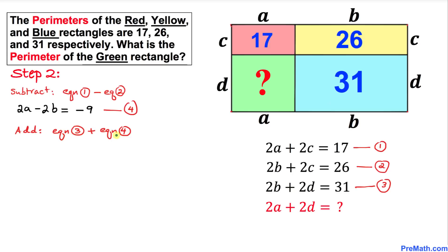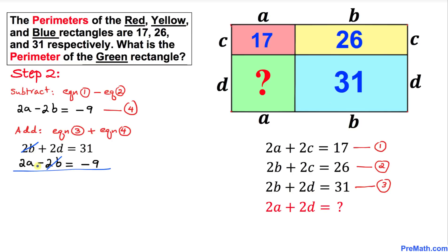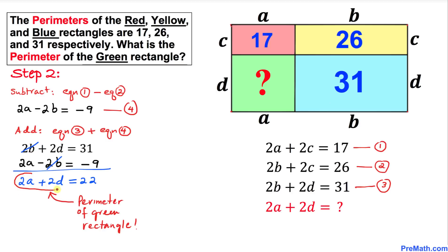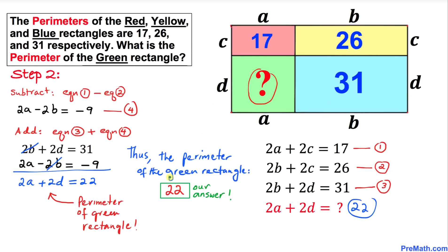Now let's go ahead and add equation three and equation four. The 2b and negative 2b cancel out, so we simply end up with 2a + 2d equals 22. And that's exactly what we were looking for — 2a + 2d is the perimeter of the green rectangle, which turns out to be 22.